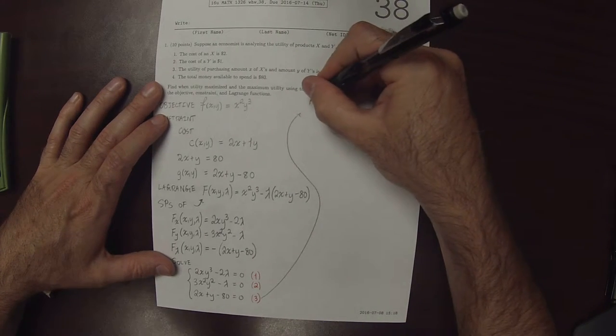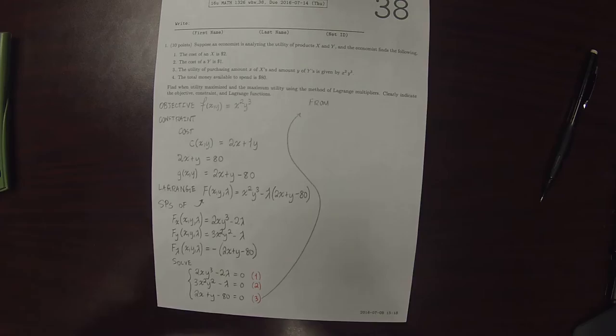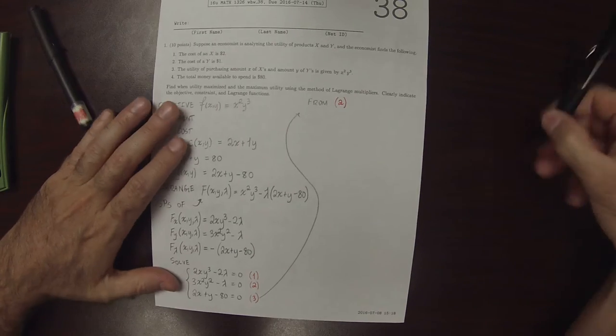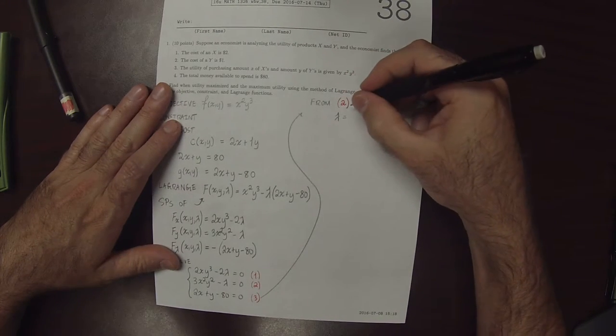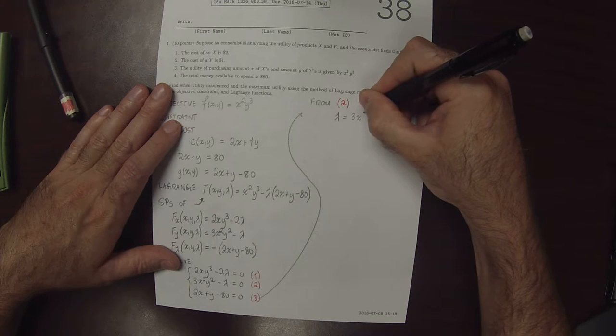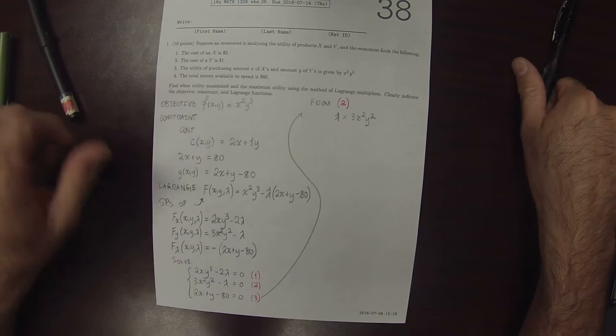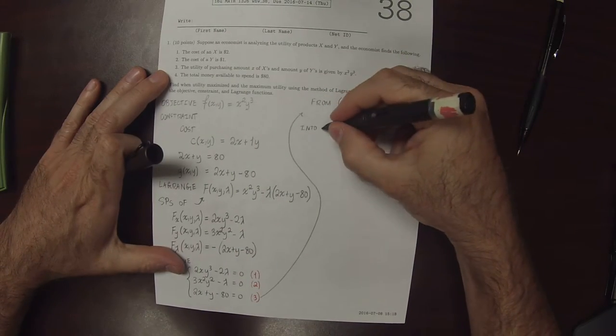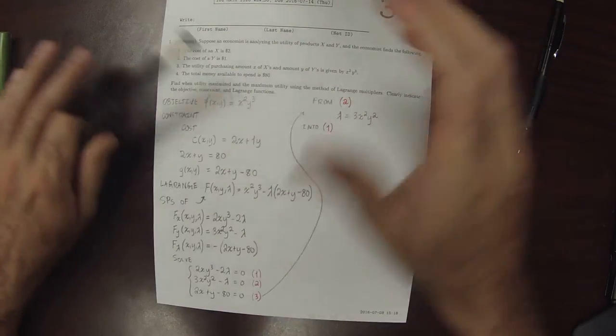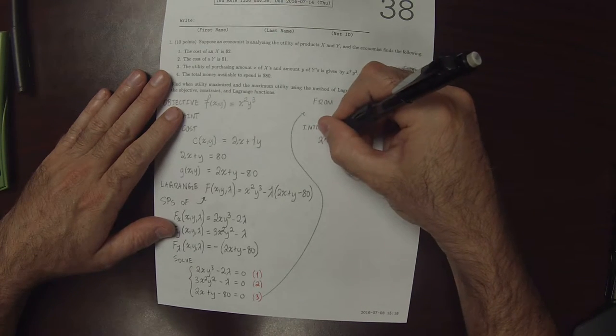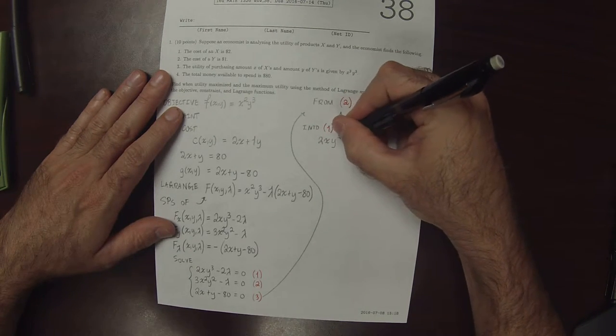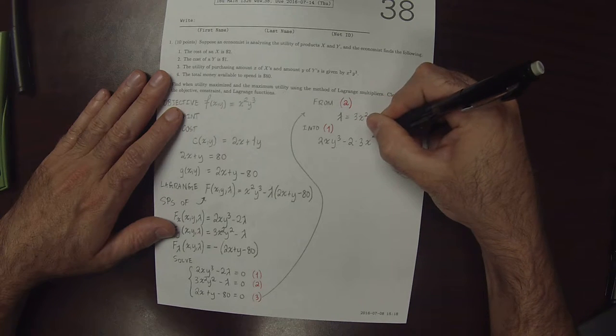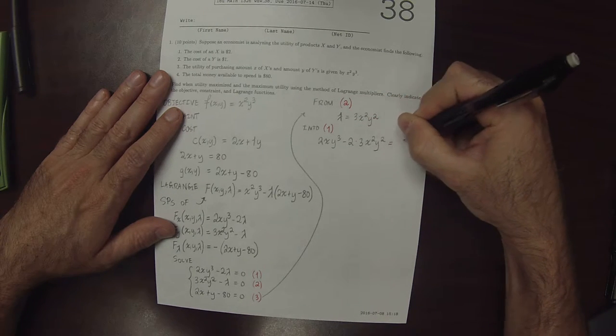I'll use equation 2. From equation 2, we can see that lambda is 3x squared y squared. Now, if we put that into equation 1, then we have 2xy cubed minus 2 lambda. So 2xy cubed minus 2 times 3x squared y squared equals zero.